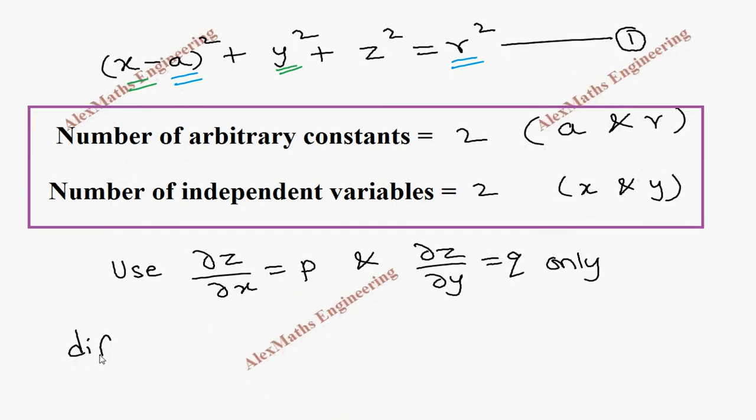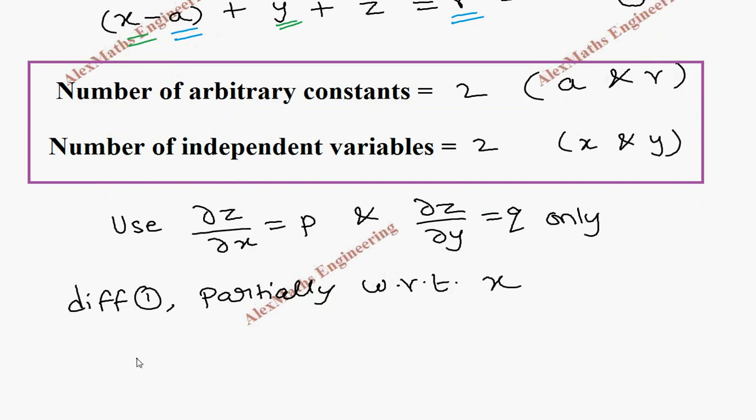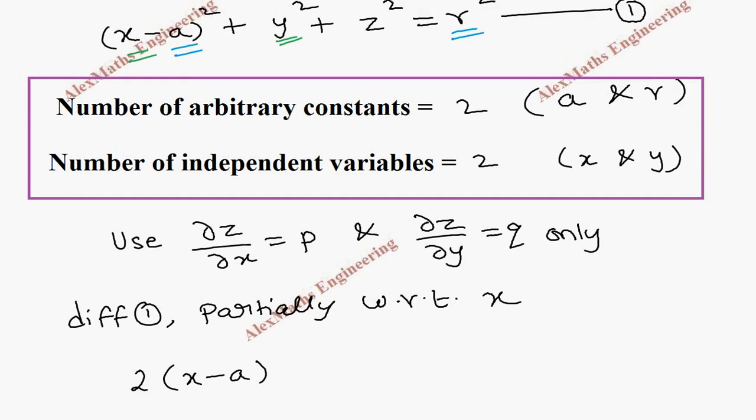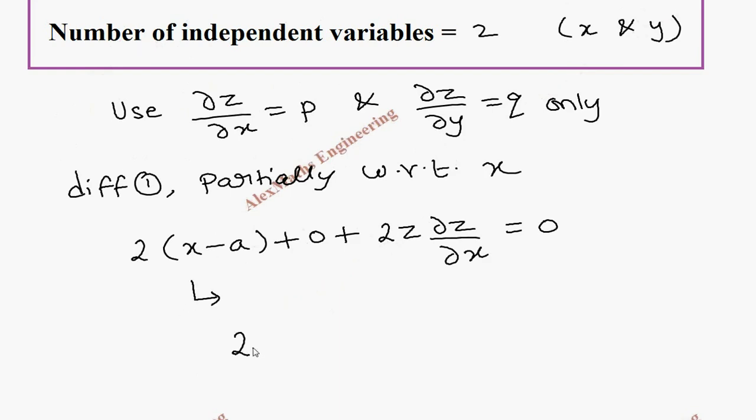Now we are going to differentiate equation 1 partially with respect to x. So this will be 2(x - a). Using the chain rule, x differentiation is 1. y is purely constant, so that will be 0. And z² gives 2z·∂z/∂x, and r² is constant.